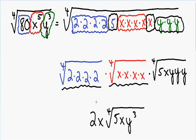So this is the solution to our problem: 2x multiplied by the fourth root of 5x times y cubed.